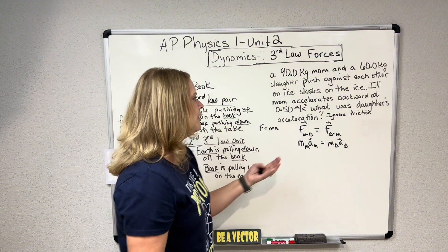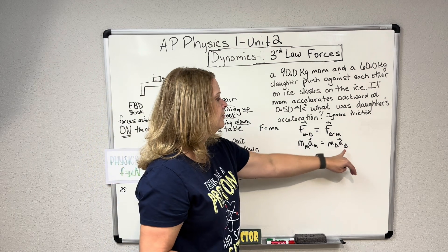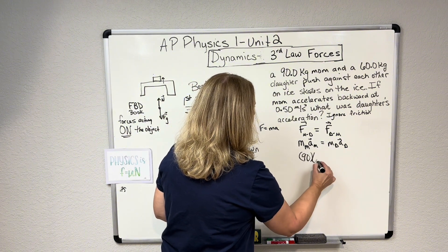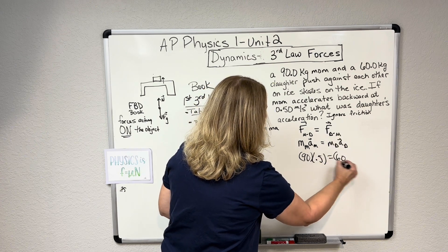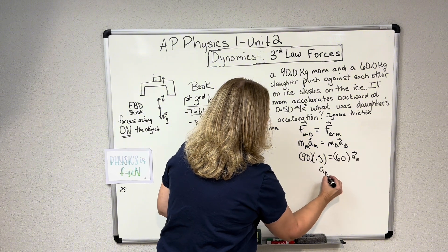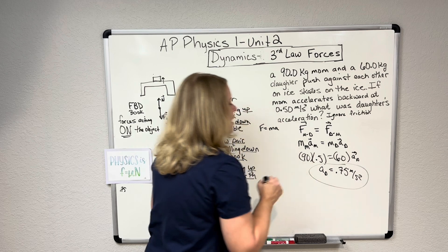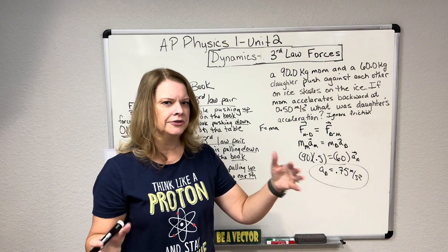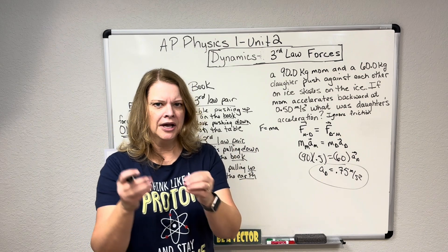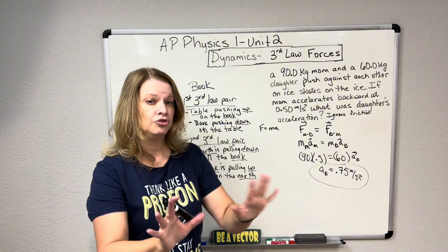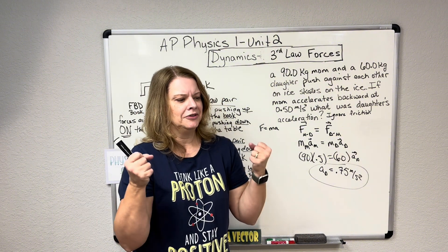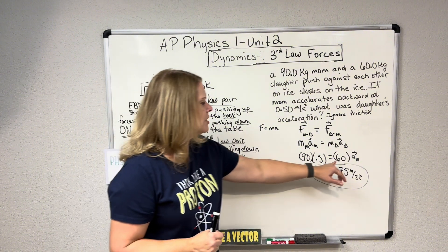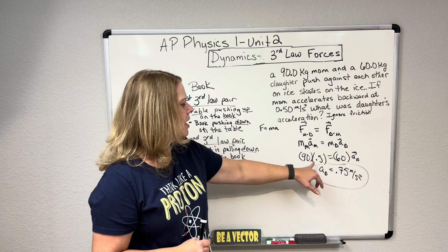We know force equals mass times acceleration, so we divide both sides by the mass of the daughter. Mass of mom is 90, her acceleration is 0.5, mass of daughter is 60, and her acceleration is what we're solving for. That comes out to 0.75 meters per second squared. In other words, the daughter is accelerating faster than mom, which makes sense because she has less mass. I used to put students on scooters — a big football player and the smallest person in the room — and have them push against each other. The football player wouldn't move much because of his large mass, while the smaller one would accelerate back much faster. Less mass accelerates more.